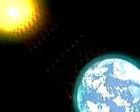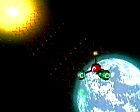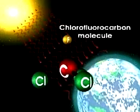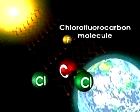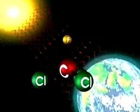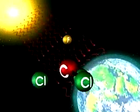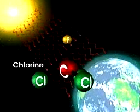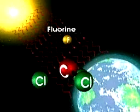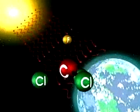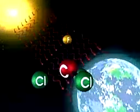A group of gases called chlorofluorocarbons, or CFCs, may pose a threat to the ozone layer. Chlorofluorocarbons are chemical compounds made up of atoms of chlorine, fluorine, and carbon. CFCs are used as refrigerants and to make plastic foam insulation.